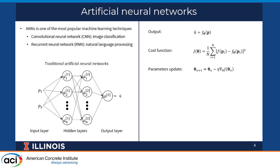ANN is one of the most popular machine learning techniques, and there are many architectures in ANN, such as CNN, RNN, LSTM, and so on. The figure here shows the basic architecture of ANN, which is a fully connected neural network. It consists of an input layer, hidden layers, and an output layer.